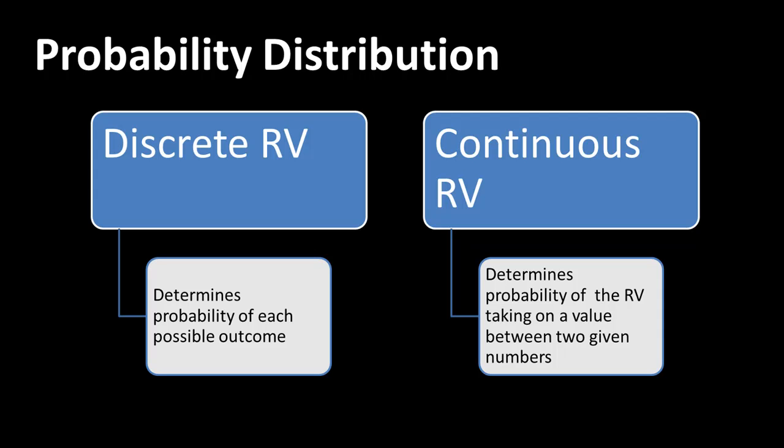That discrete random variable could be zero customers or 200 customers, with every value in between. It's even possible that 200,000 customers will show up, except that has an extremely low probability — maybe 0.0000001. Whereas the probability of 0 to 50 customers showing up might be very high, like 0.8. So you can talk about discrete random variables and their probability distributions even for things which have more than two outcomes.